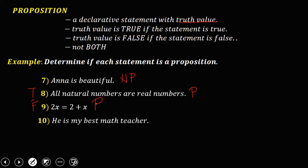'He is my best math teacher.' What is best to you may not be best to others — this one is subjective, so not a proposition. To recap: a proposition is a declarative statement with a truth value. The truth value is true if the statement is true, and false if the statement is false, but not both.